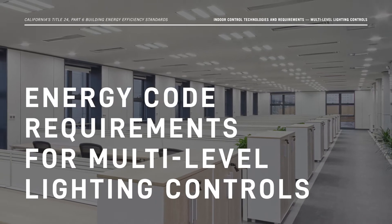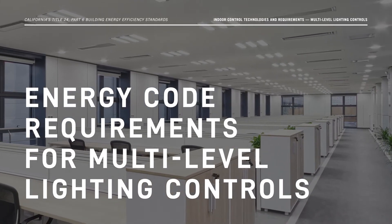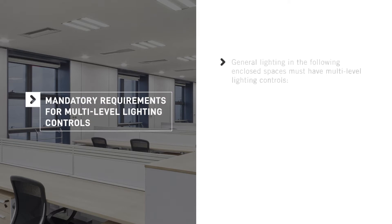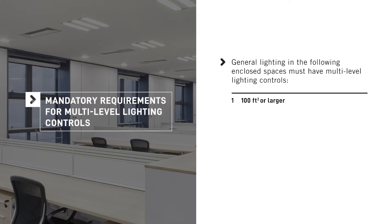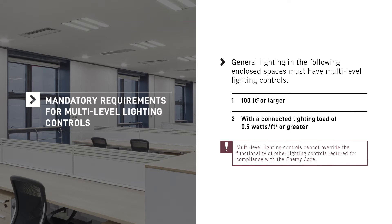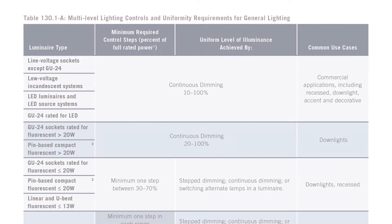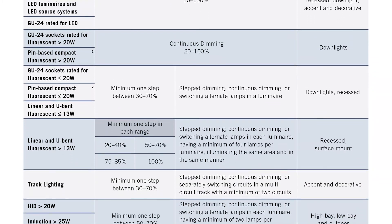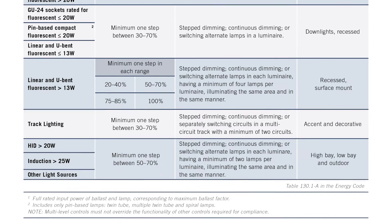Now that we know how multi-level lighting controls are defined, let's discuss the mandatory requirements for indoor multi-level lighting controls. Under the Energy Code, general lighting in enclosed spaces 100 square feet or larger and with a connected lighting load exceeding 0.5 watts per square foot must have multi-level lighting controls. It's important to remember that multi-level lighting controls cannot override the functionality of other lighting controls required for compliance with the Energy Code. To be compliant, multi-level lighting must provide the number of control steps and meet the uniformity requirements specified in Table 130.1-A.